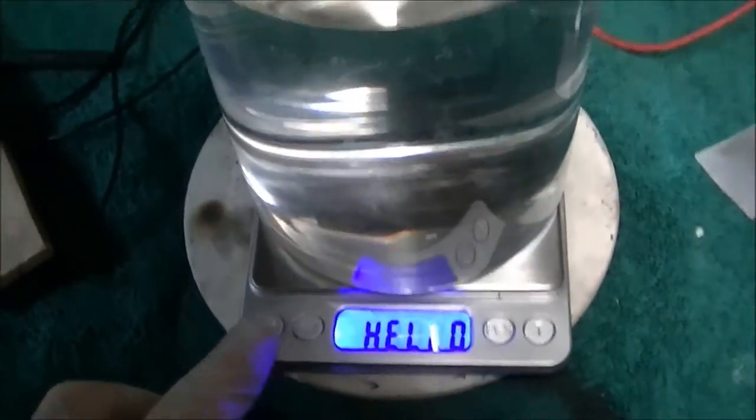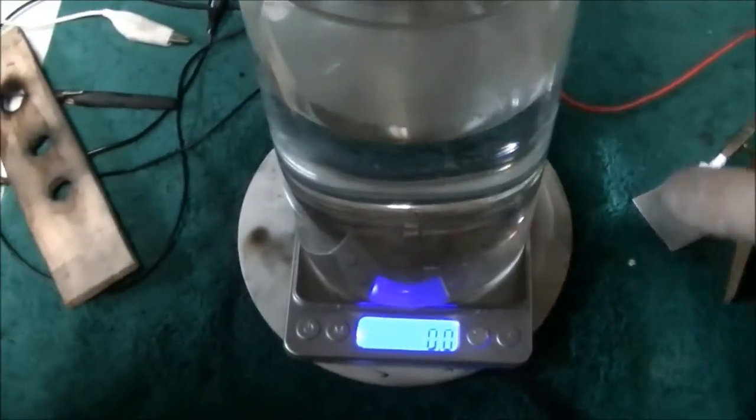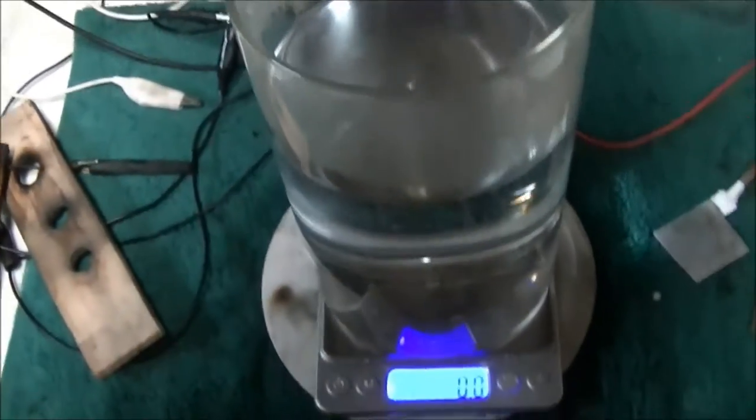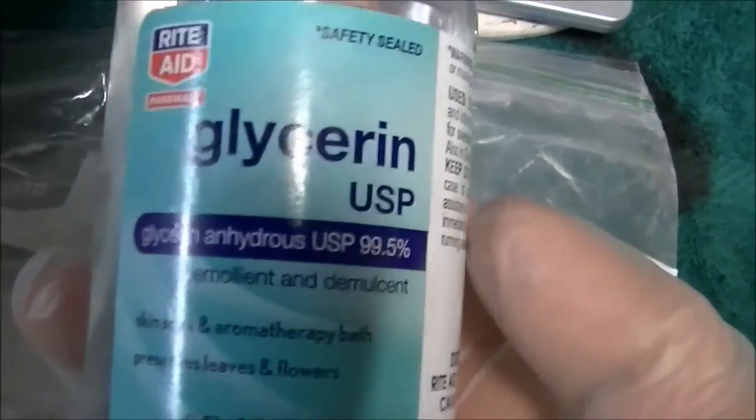I'll link some research papers down below in the description. Now that I've warmed it up to help the solubility of my chemicals, I'm going to put in 1.5 grams of sodium carbonate and some glycerin, some anhydrous glycerin.